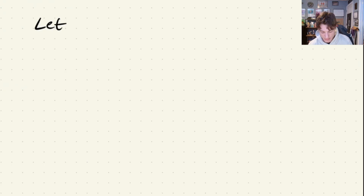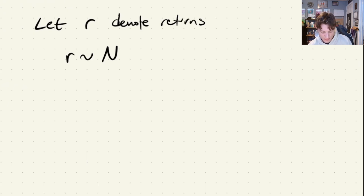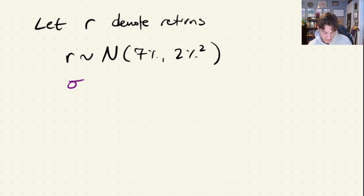We're trying to figure out the probability that a randomly selected return is going to be less than five percent. We'll start by letting R denote returns. R is a random variable that follows a normal distribution with a mean of seven percent and a variance of two percent squared — the problem gives us a standard deviation of two percent, which implies the variance is two percent squared.